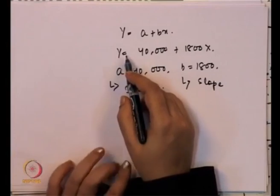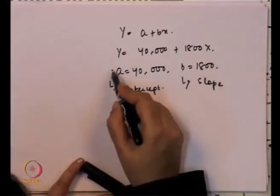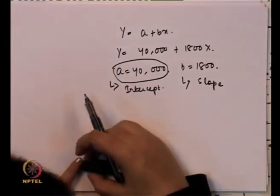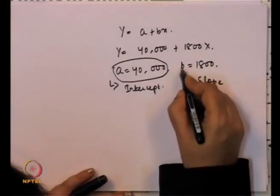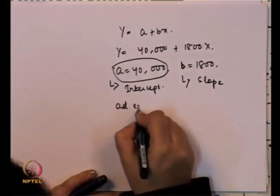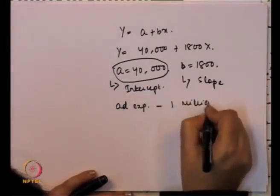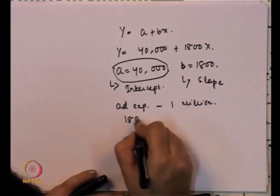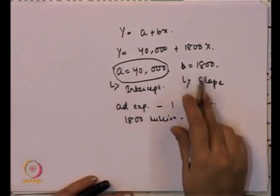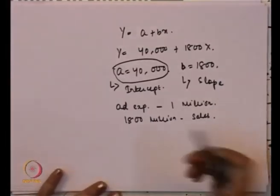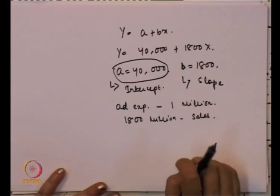If y is sales and x is advertisement expenditure, when there is no advertisement expenditure, the value of y will be equal to 40,000. So, total sales without advertisement expenditure will be 40,000. Since the value of b is 1800, if the measurement unit is in million terms, advertisement expenditure of 1 million will bring 1800 million increase in sales.